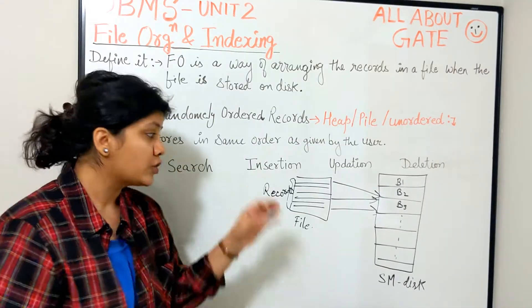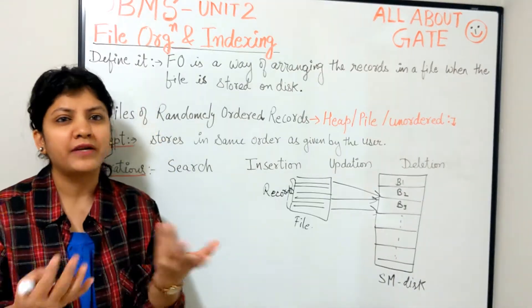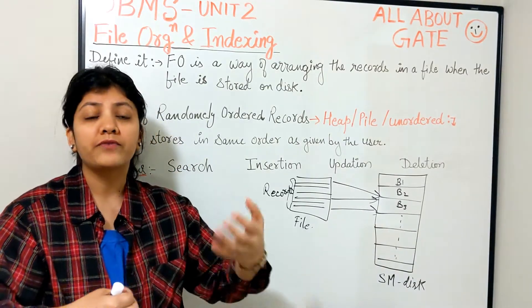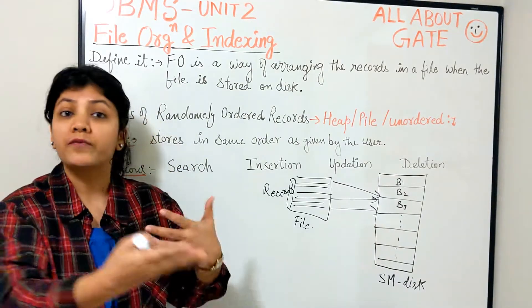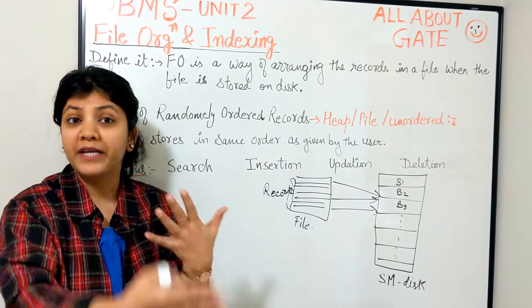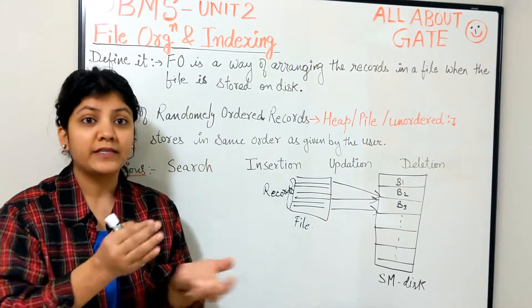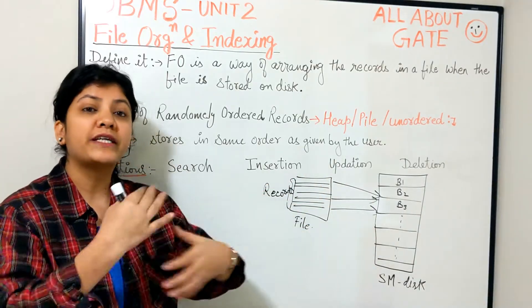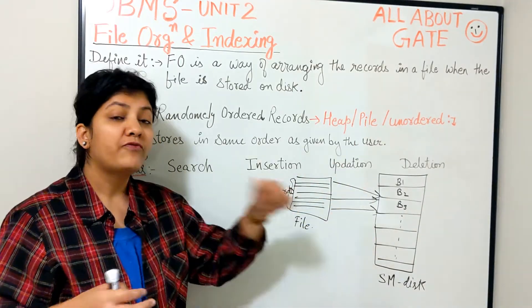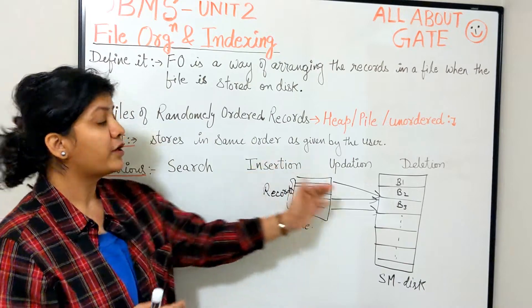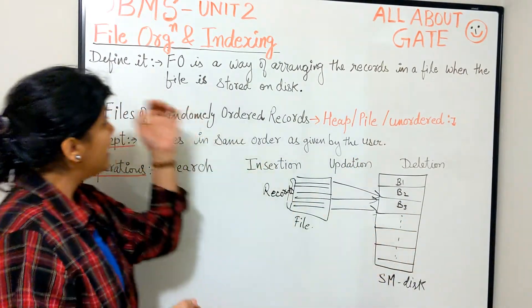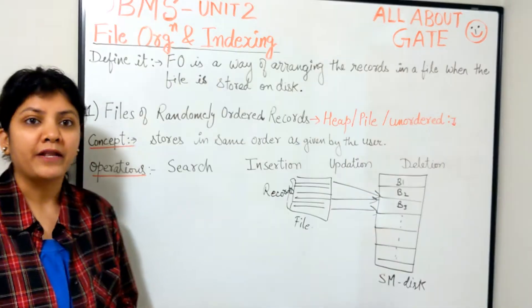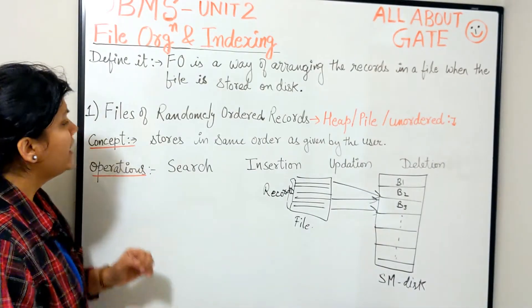The access method will matter when you need to perform certain operations on the records, which could be retrieval or simple search, insertion of a new record, deletion of a certain record, or updation of a certain record. All these are file operations. How efficiently they can be performed will be dependent upon how the records are actually stored — that is exactly what file organization means.